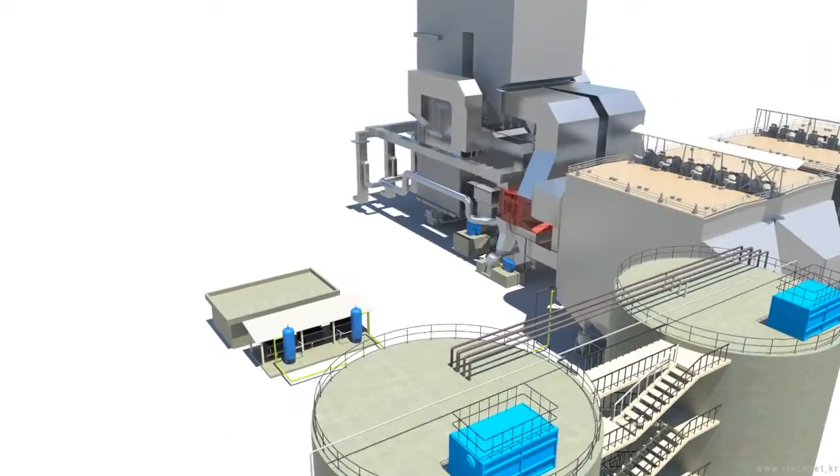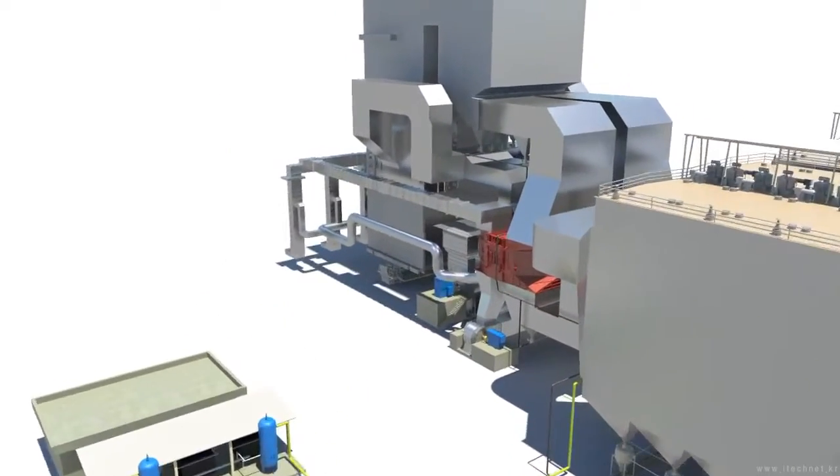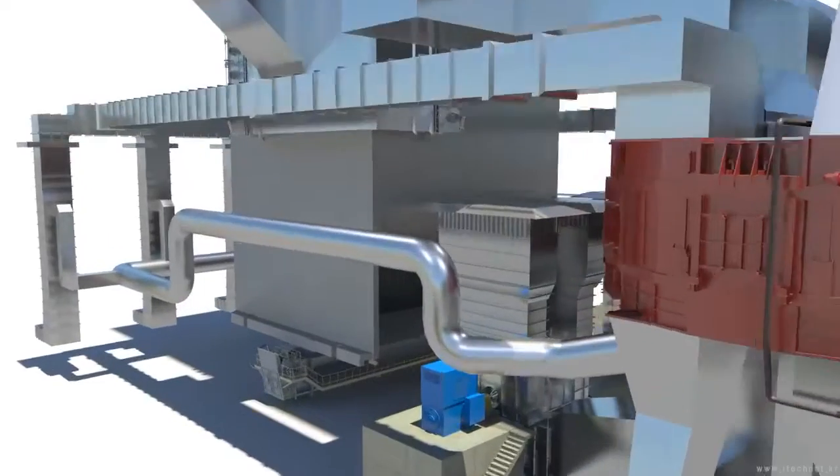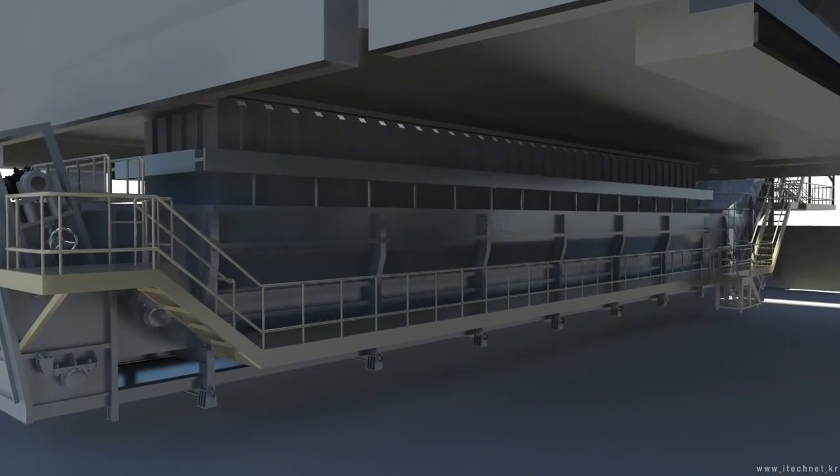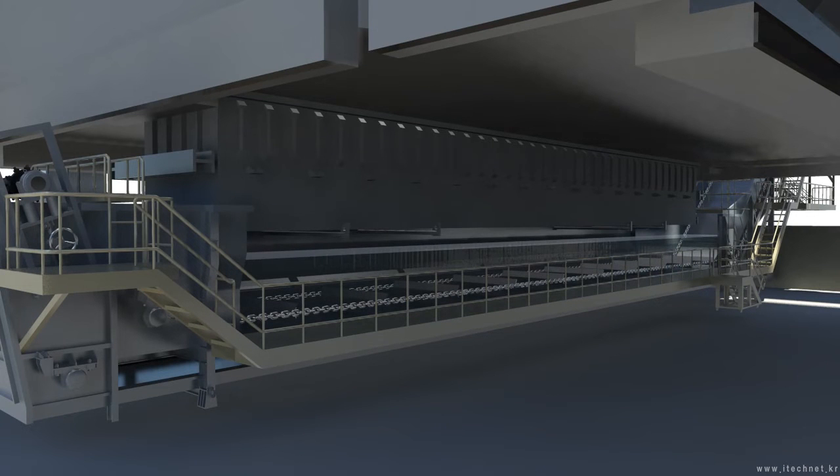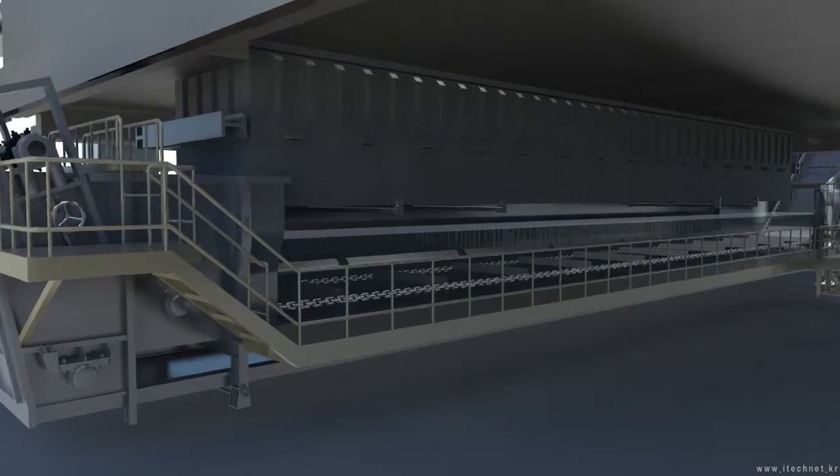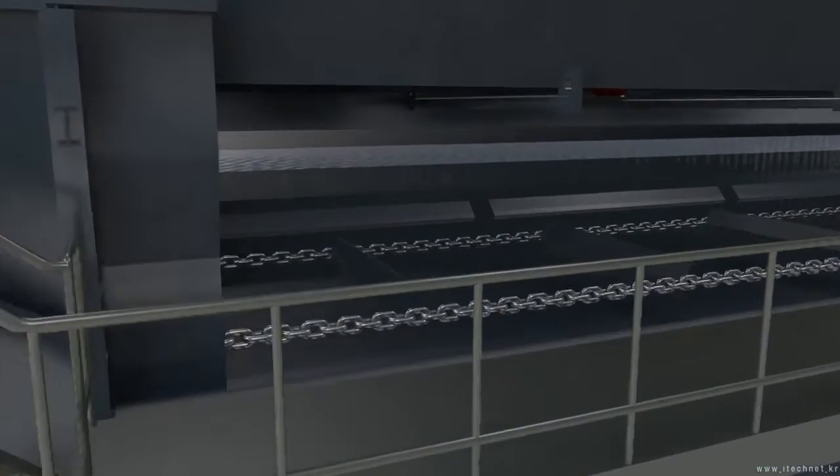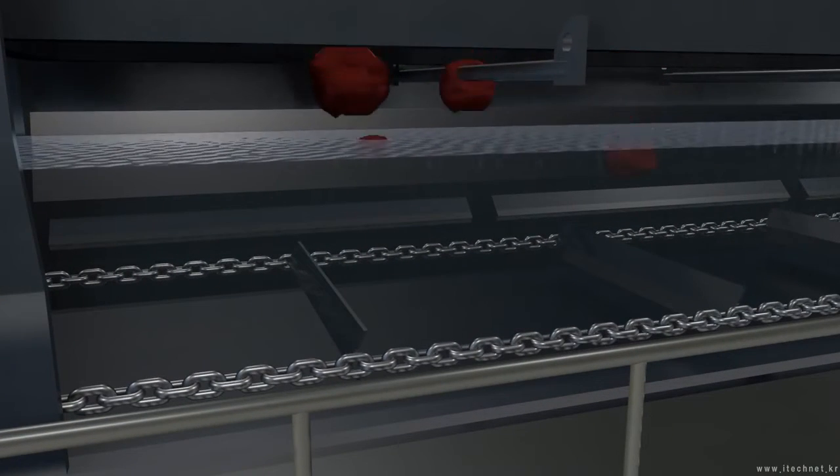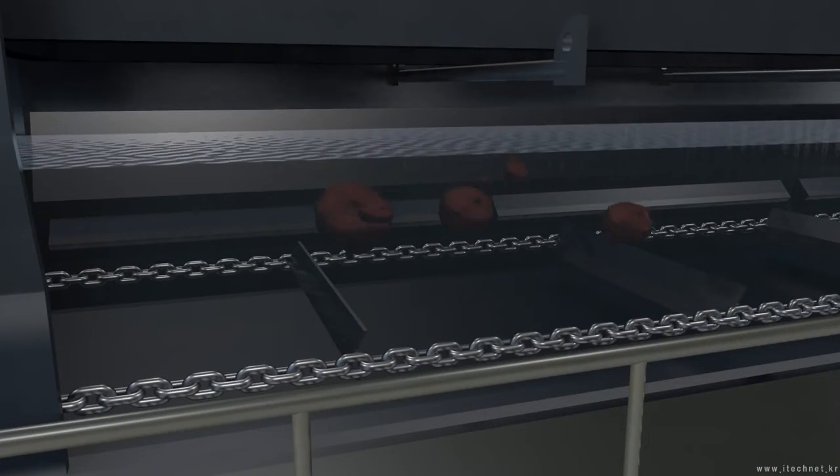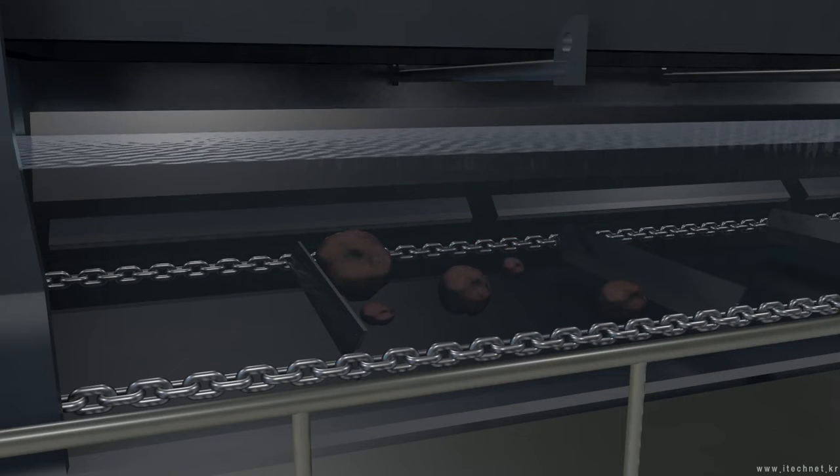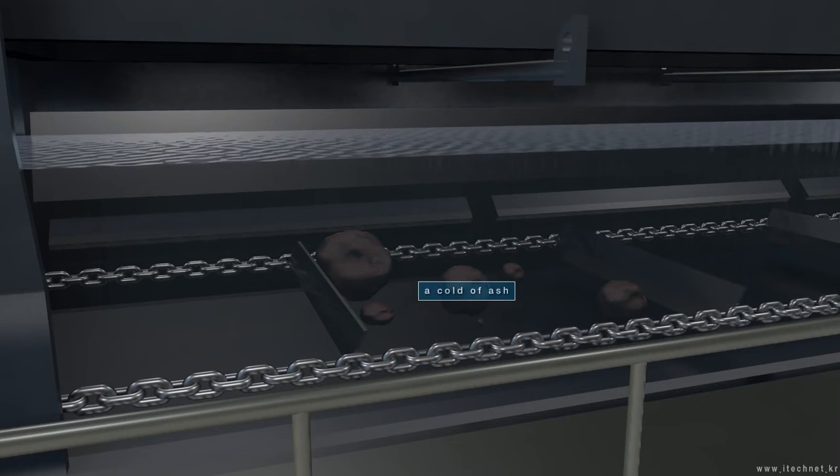The function of the bottom ash handling system is to collect, cool and crush the furnished bottom ash and deliver it to the bottom ash bunker. The upper trough of the drag chain conveyor is always filled with under 60 degrees Celsius water at a definite level. The hot bottom ash which just dropped from the boiler is being cooled when it drops to the water of the drag chain conveyor.